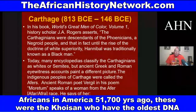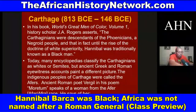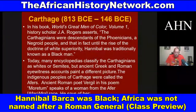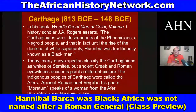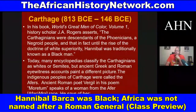In his book 'World's Great Men of Color,' J.A. Rogers — and if you study Malcolm X, you know he talked about J.A. Rogers — writes that the Carthaginians were descendants of the Phoenicians, a negroid people, and that until the rise of the doctrine of white superiority, Hannibal Barca was traditionally known as a Black man.